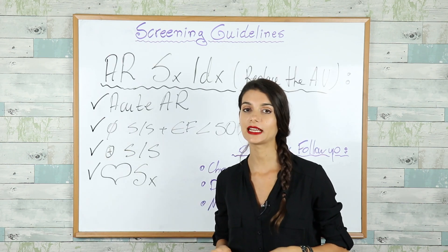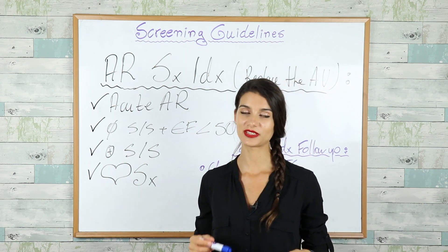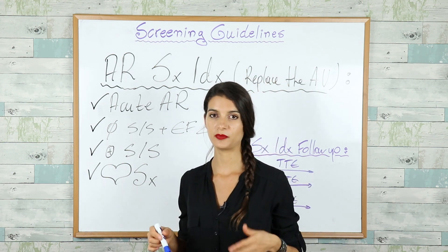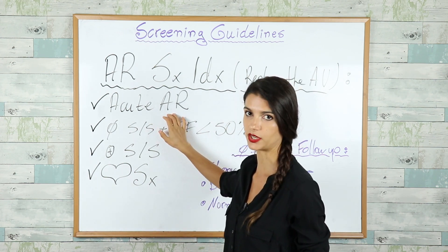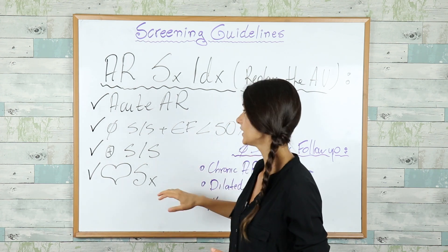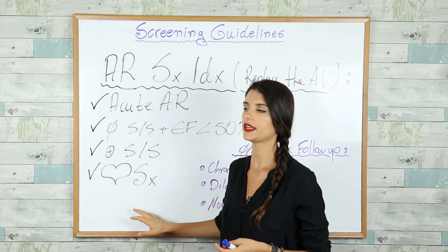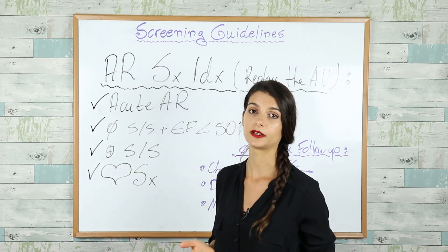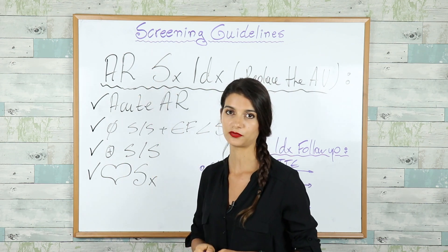The aortic regurgitation surgical guidelines are also quite complicated, but they are unlikely to be heavily tested on USMLE Step exams, so here is the short and sweet version. We perform surgery — replacing the regurgitant valve — in patients with acute aortic regurgitation, or if they have chronic AR with symptoms, or if they are asymptomatic but their ejection fraction is less than 50%, or if they are undergoing other cardiac surgery such as repair of an aortic root aneurysm.